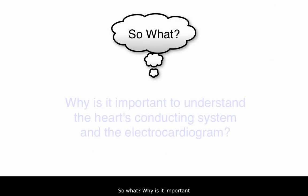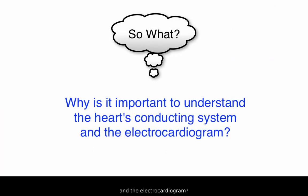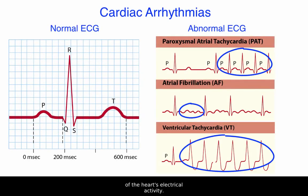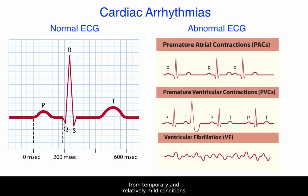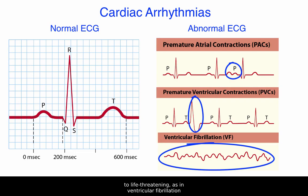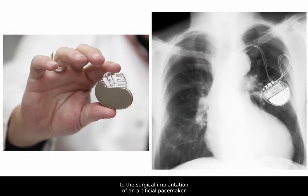Why is it important to understand the heart's conducting system and the electrocardiogram? This knowledge is crucial to detecting and diagnosing cardiac arrhythmias, abnormal patterns of the heart's electrical activity. Cardiac arrhythmias can be caused by drugs and hormones, a heart attack, or for unknown reasons, and can range from temporary and relatively mild conditions, such as premature contractions of the atria or ventricles, to life-threatening, as in ventricular fibrillation, when the ventricles quiver and are unable to eject blood. Many other cardiac arrhythmias are possible, and treatments range from medications to the surgical implantation of an artificial pacemaker to regulate heart rate.